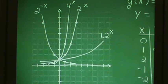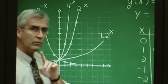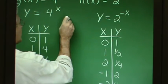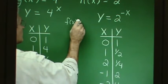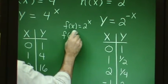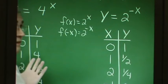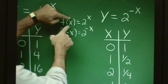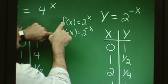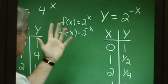Why is that reflection happening? If f(x) equals 2^x, then f(negative x) equals 2 to the negative x. That's exactly the idea that f(negative x) gives us a reflection of the graph of f in the y-axis — and that's what's occurring here.